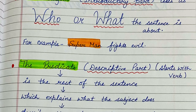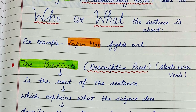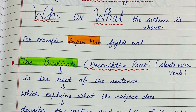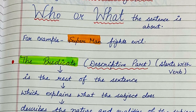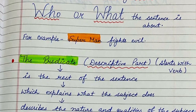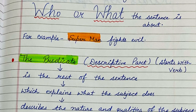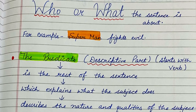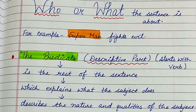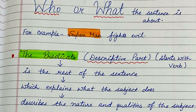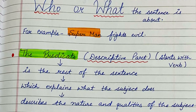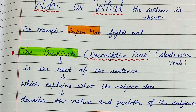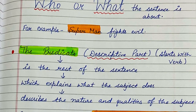Now we will discuss about the predicate. What do we understand by predicate? The predicate is the descriptive part — it describes about the subject. It will describe about the subject, like who fights evil or what the gardener is doing. So predicate is the descriptive part; it will describe about the subject in detail. And predicate always starts with the verb. The verb can be a main verb or it can be a helping verb, but predicate always starts with the verb.